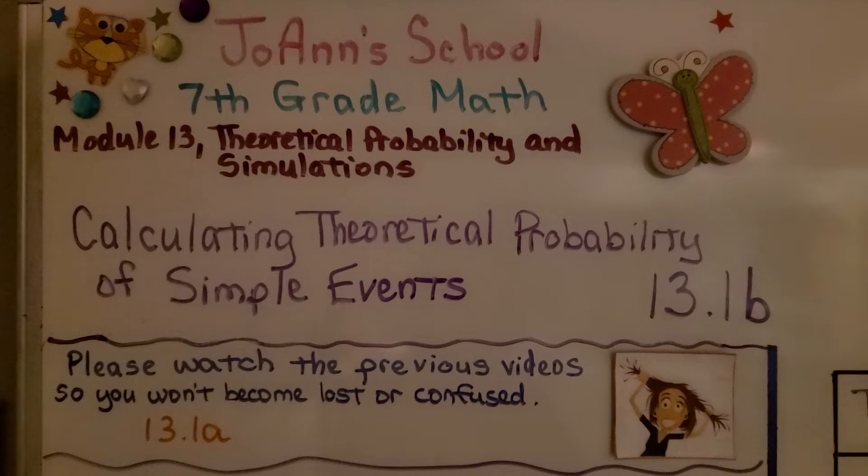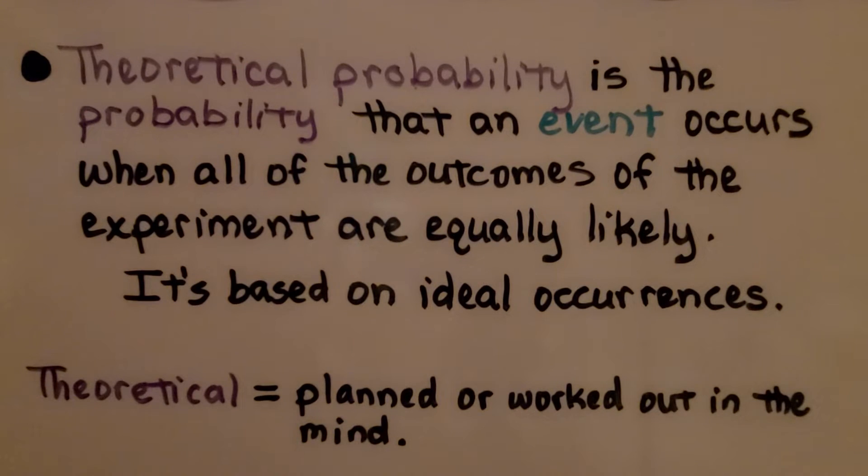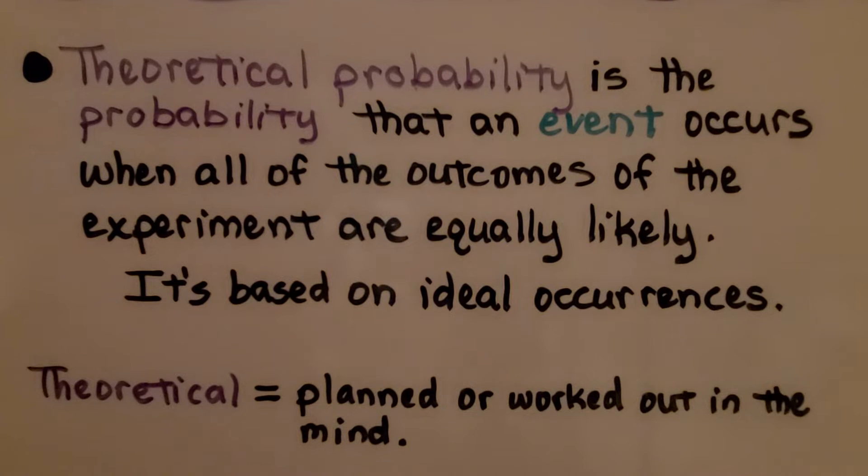Lesson 13.1b: Calculating Theoretical Probability of Simple Events. Theoretical probability is the probability that an event occurs when all of the outcomes of the experiment are equally likely. It's based on ideal occurrences. Theoretical means planned or worked out in the mind.